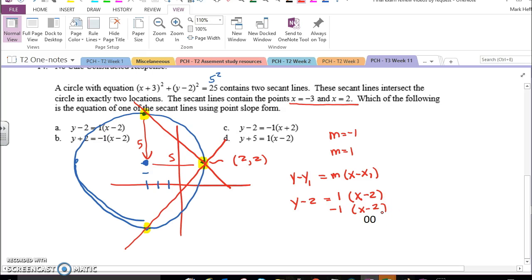So the right answer is, looks like this one right here, y minus 2, equals 1, times x minus 2.